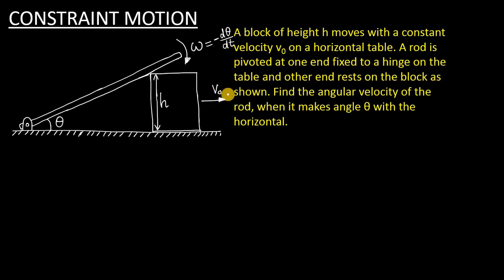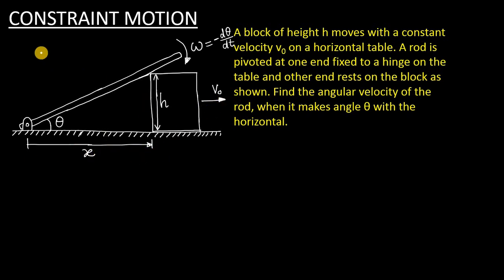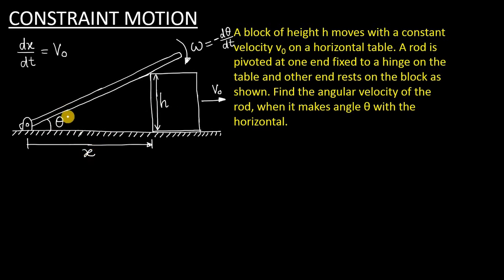Now, how can we relate this velocity v0 with the distance? From the hinge, we take the distance to the block as x. As the block moves rightwards with velocity v0, x is going to increase. So dx/dt equals v0, and minus dθ/dt is the angular velocity of the rod, with h constant. We can clearly see that a right triangle is forming, and in this right triangle one can write the relation between h, x, and theta: h divided by x equals tan theta.